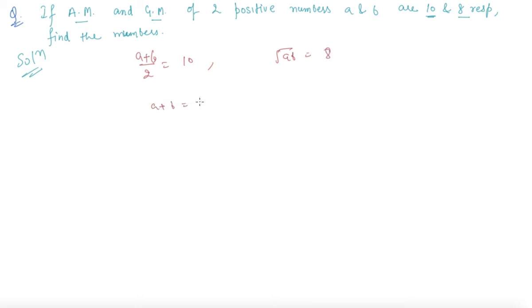AM is (A+B)/2 which is 10, and root of AB which is given to us as 8. From here we are getting A+B equals 20, and AB equals 64 by squaring on both sides. I can use the formula (A+B)² which will be 400 from this.